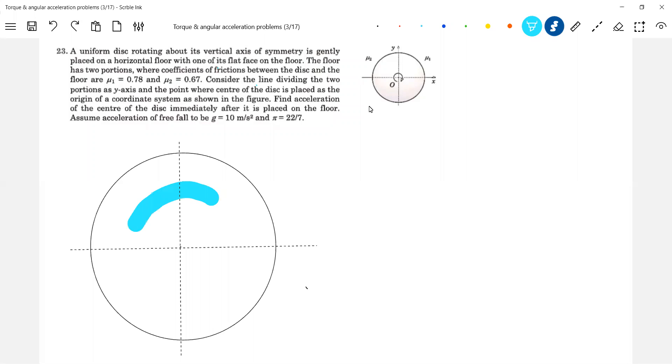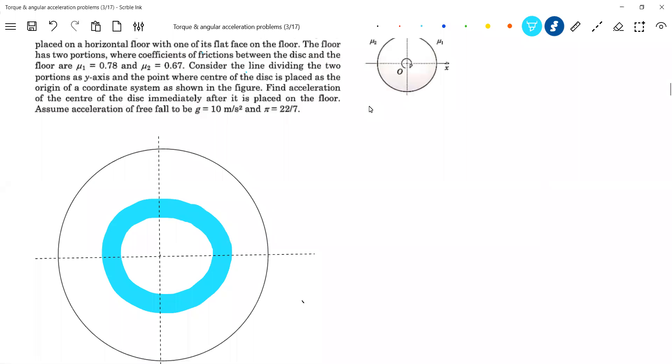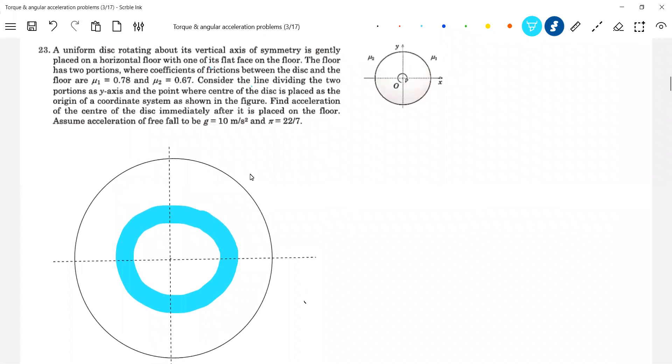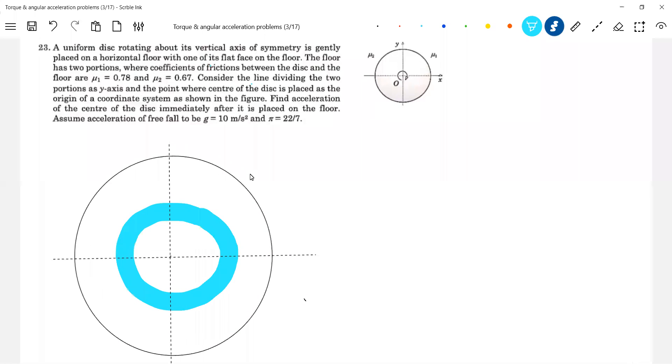Let me assume a strip, a circular strip. I'll assume some rough diagram. I assumed a strip. Then, what is the width of the strip? Let it be DR. And the radius of this particular ring? Let it be R.